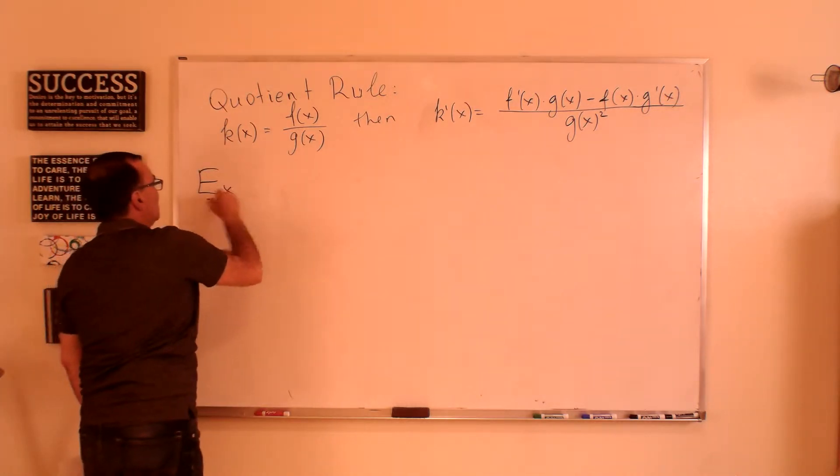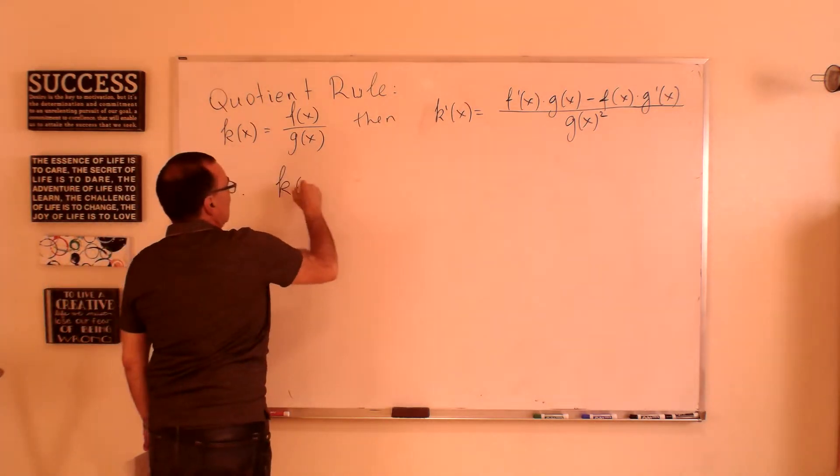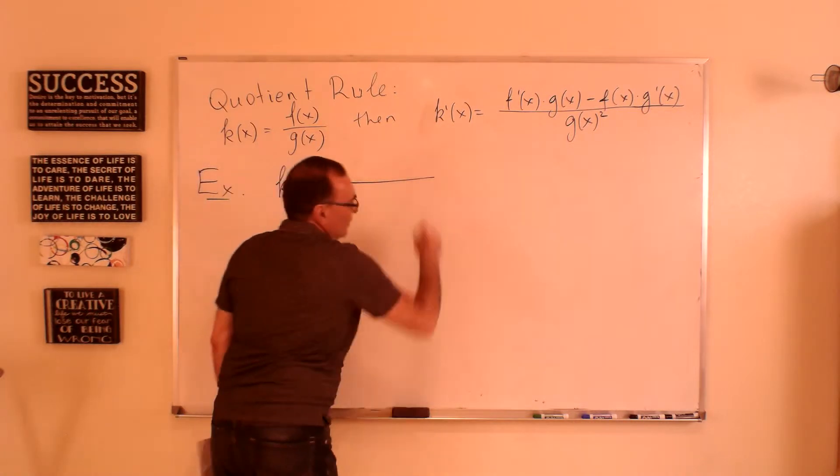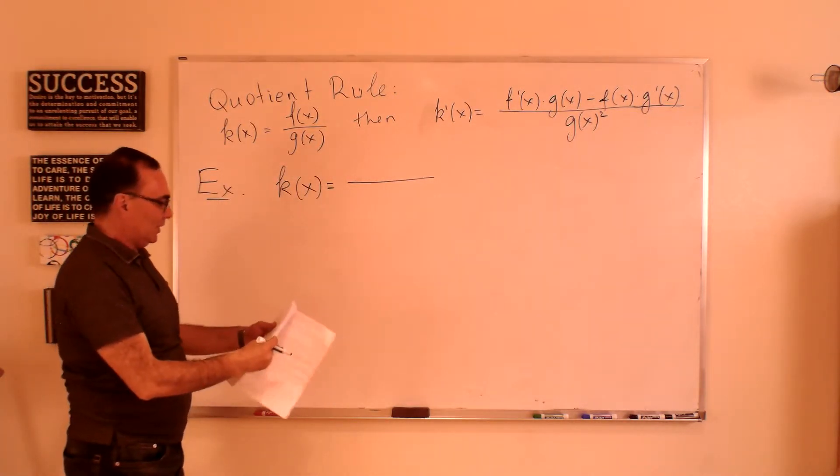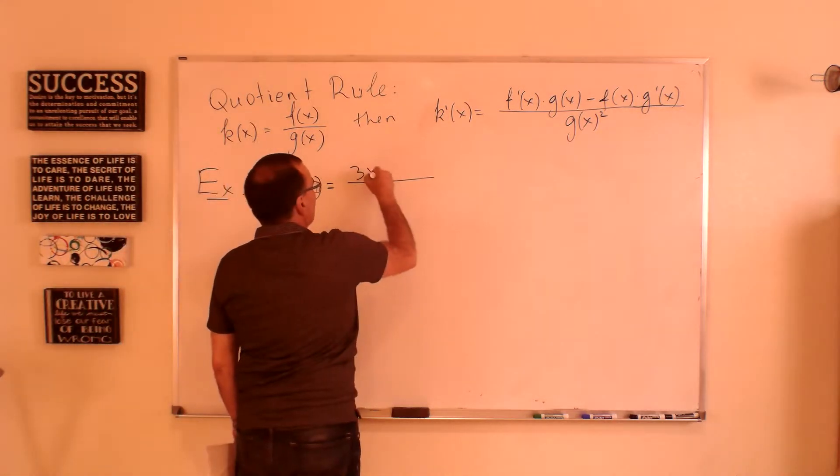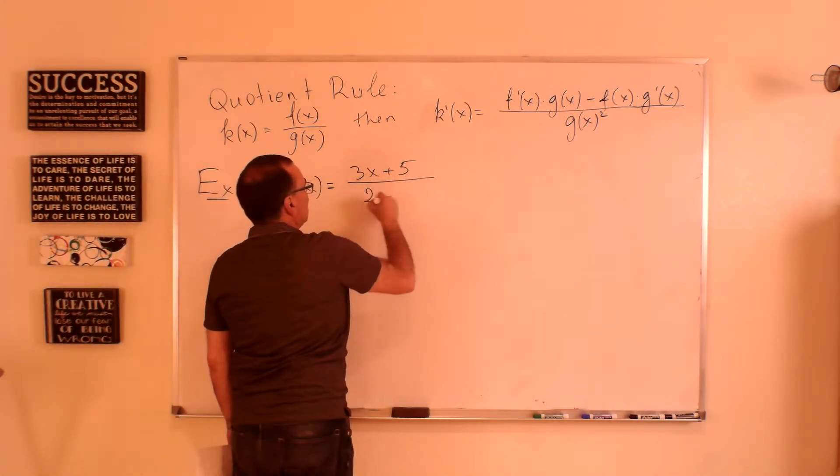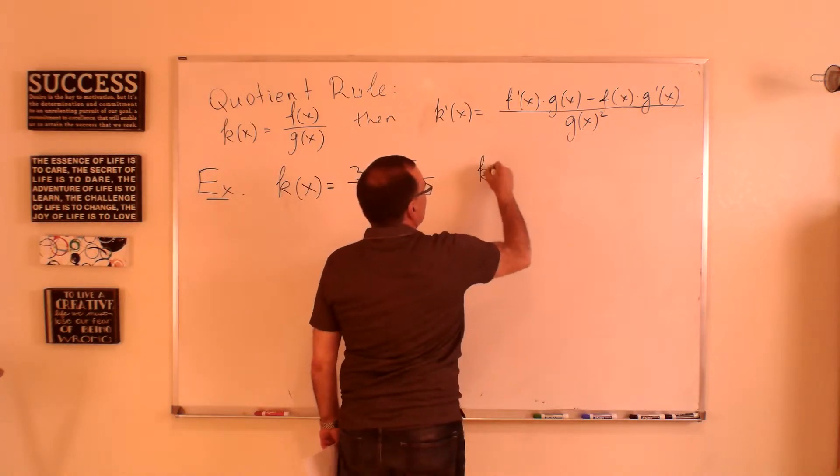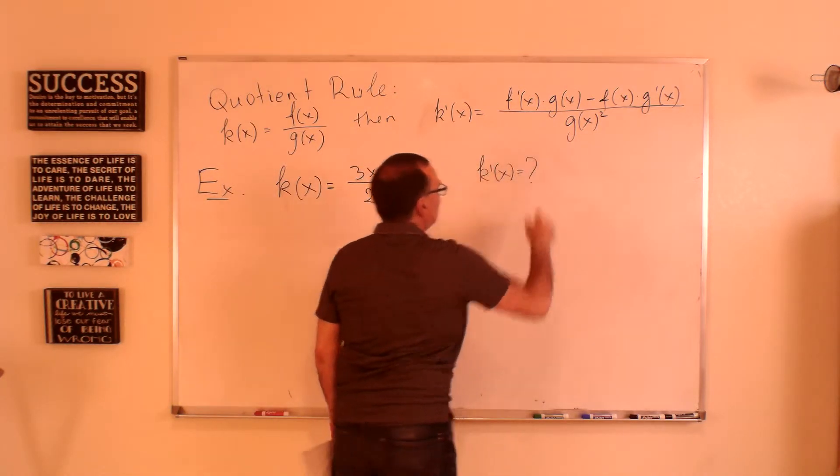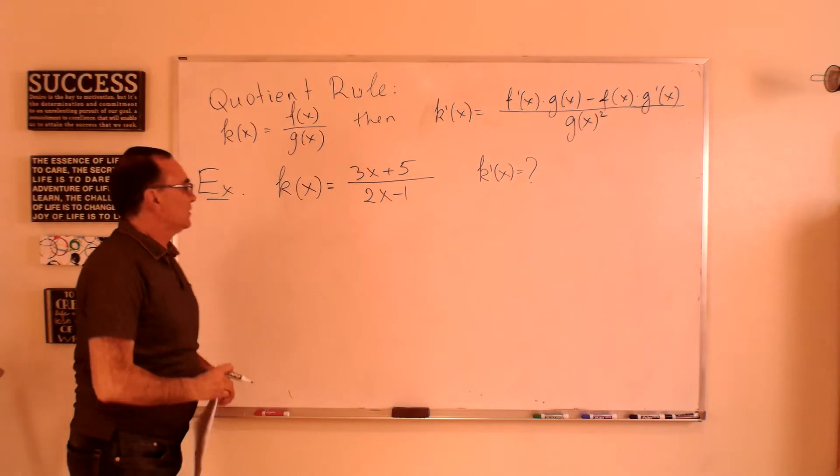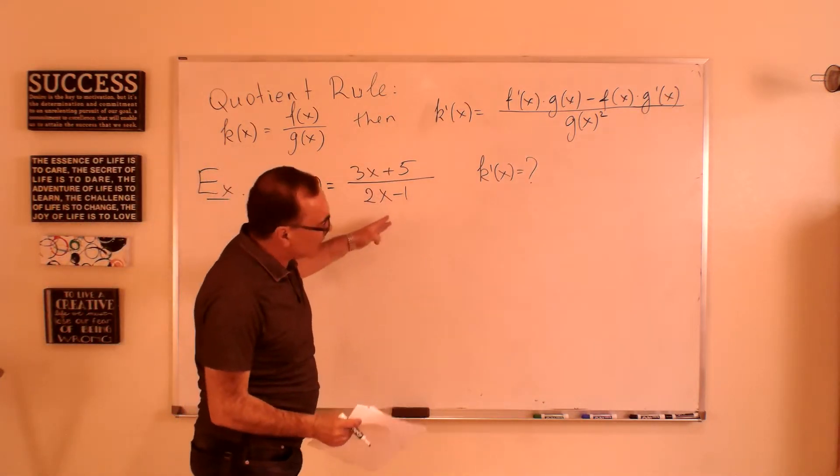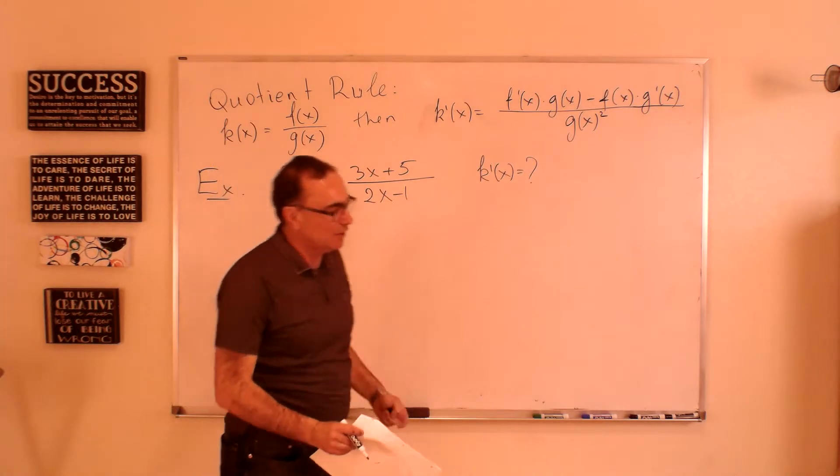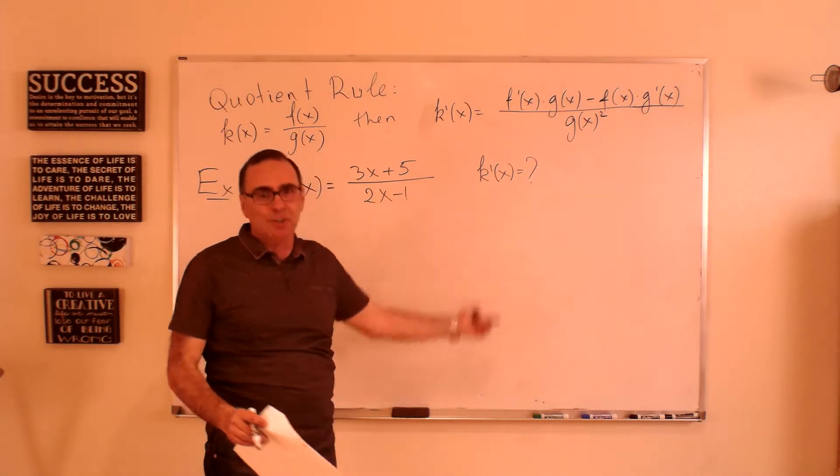And here are some examples. Let's do a simple example like 3x plus 5 divided by 2x minus 1, and then find the derivative. Now, to find the derivative of this function, we cannot simplify it. If it were a product, we would be able to simplify it into a polynomial. This one is not possible to simplify.